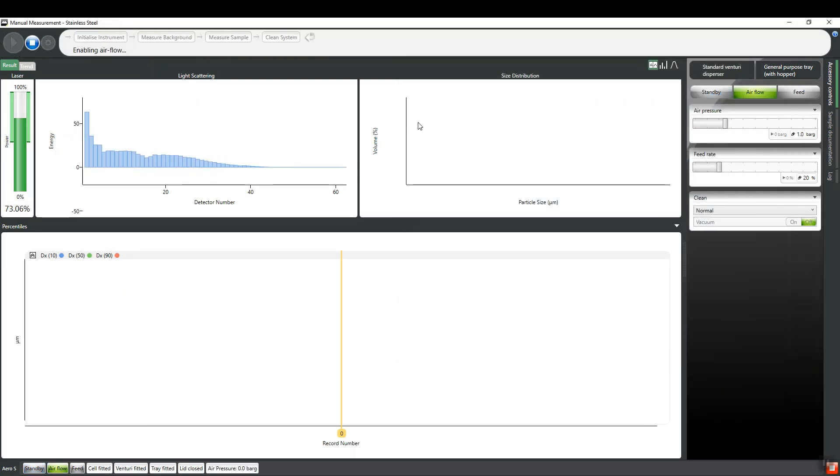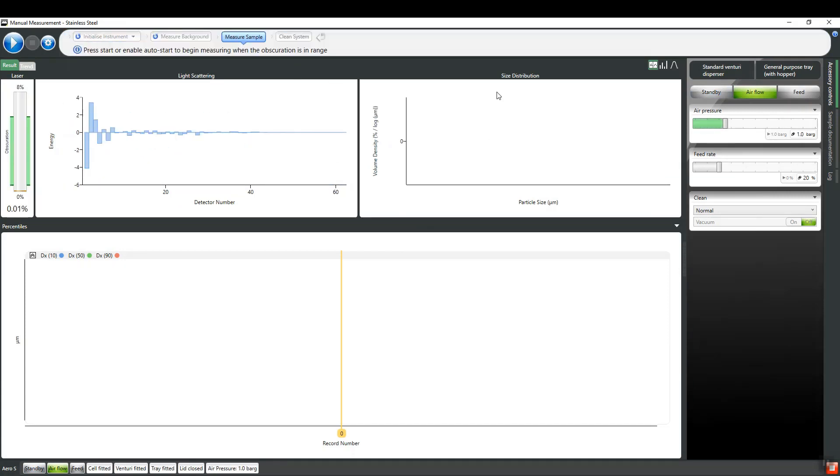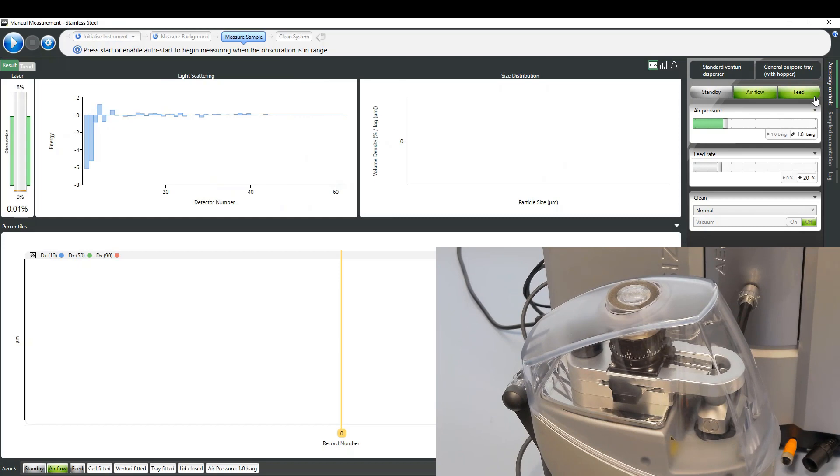Once all done, the measurement process can be initiated, first proceeding with automatic alignment and background measurements. The feed can then be started, and the measurements begin once the obscuration arrives in a defined range.